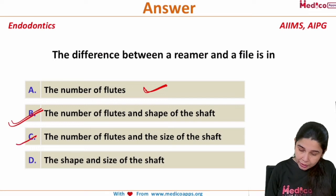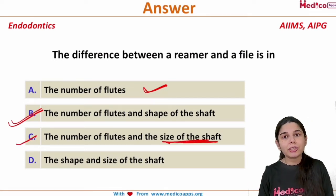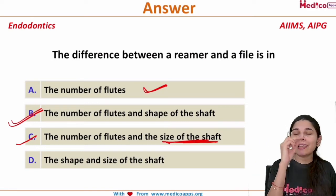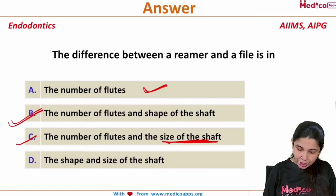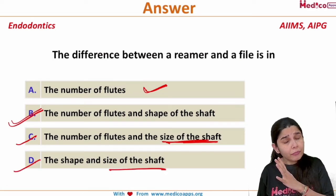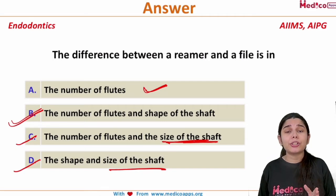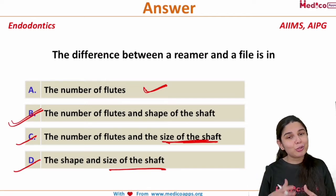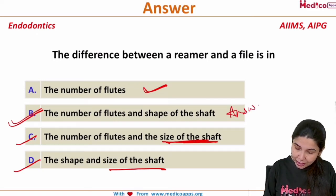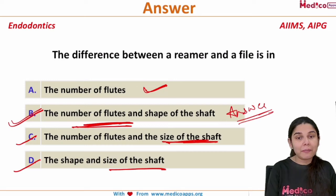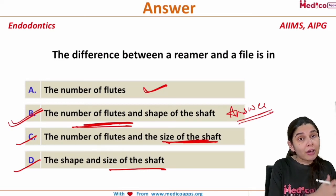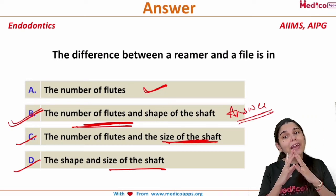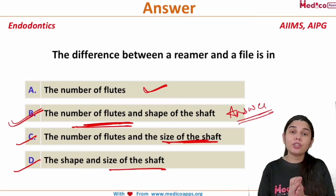The other options mentioned the number of fluids and size of the shaft — we did not discuss the size of the shaft — and option D was shape and size of the shaft. That is why I told you the options are very, very close to each other and very confusing. The answer is option B because the difference is between both the number of fluids and the shape of the shaft, which is the most important and relevant answer.